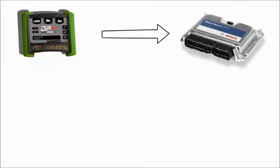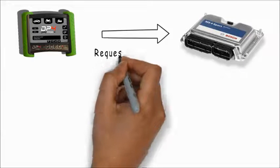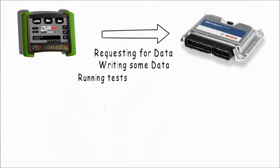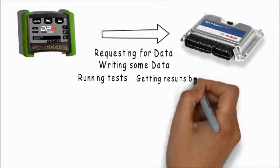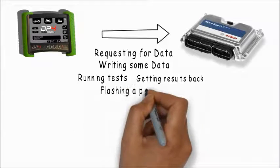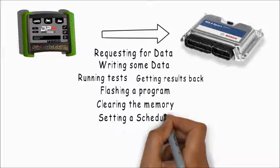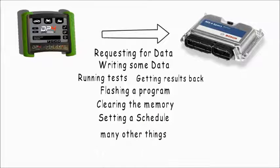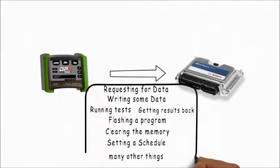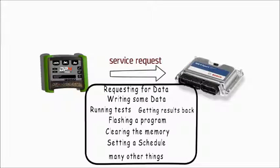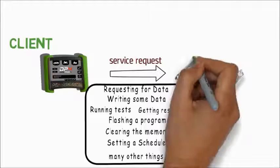When we say action, it can be either requesting some data, writing some data, running some tests on car components and getting results back, flashing a program in the ECU, clearing the memory, setting a schedule, and many other things. A tester triggers these actions in the form of a service request.